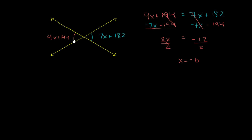And now we can use that information to find out the measure of either one of these angles, which is the same as the other one. So we can see here that if we take 7 times negative 6 plus 182. So 7 times negative 6 is negative 42 plus 182 is going to be equal to 140 degrees.